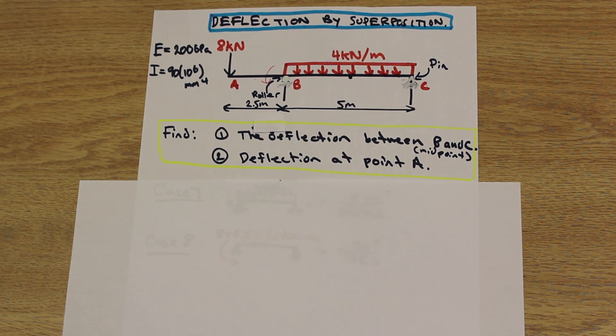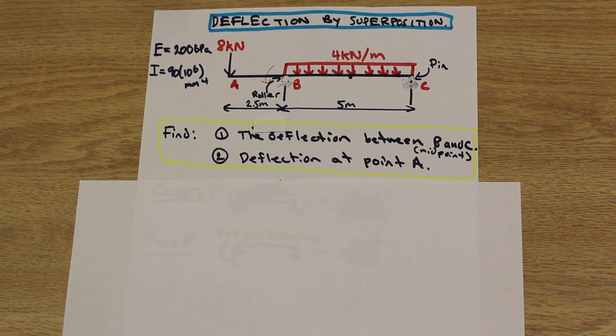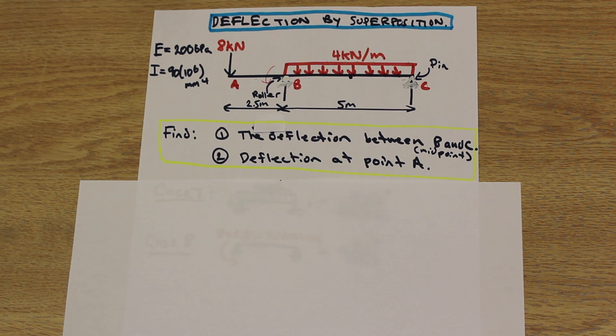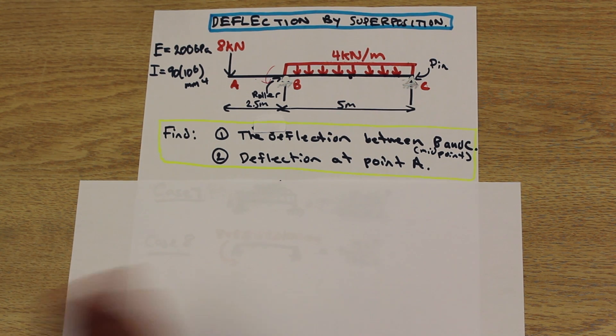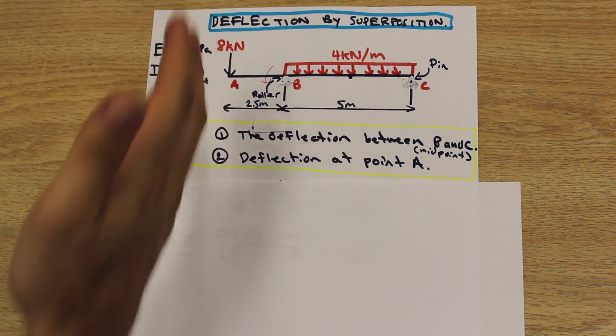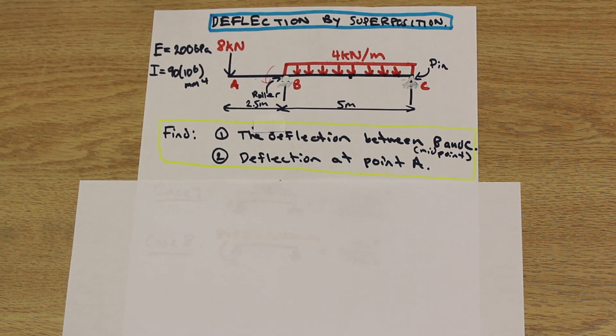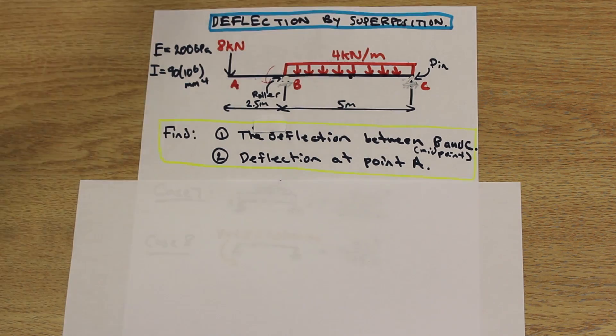So some may say superposition is easier, there's not as many numbers, but it depends on what you like to do, calculation or things visually. And some people have a lot of problems with superposition because there are some tricks, but if you can practice and get all these cases down, then you shouldn't have a problem with this.